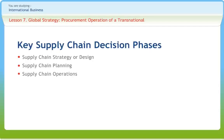In the supply chain operations phase, the time horizon is weekly or daily and companies make decisions regarding individual customer orders. During this phase, firms allocate inventory or production to individual orders, set a date that an order is to be filled, generate pick lists at a warehouse, allocate an order to a particular shipping mode and shipment, set delivery schedules of trucks, and place replenishment orders.